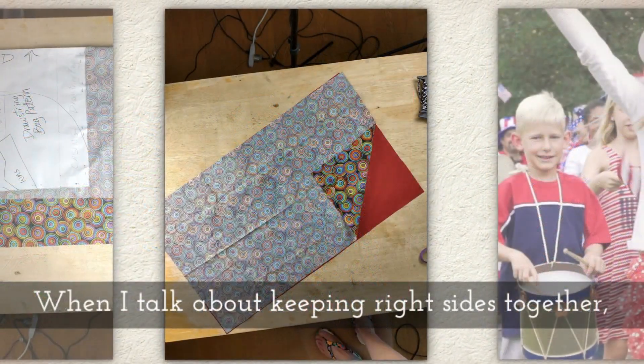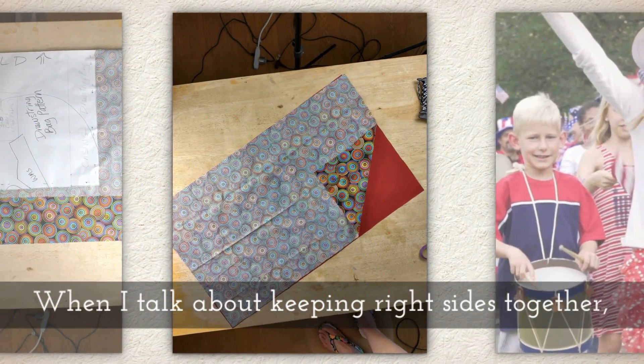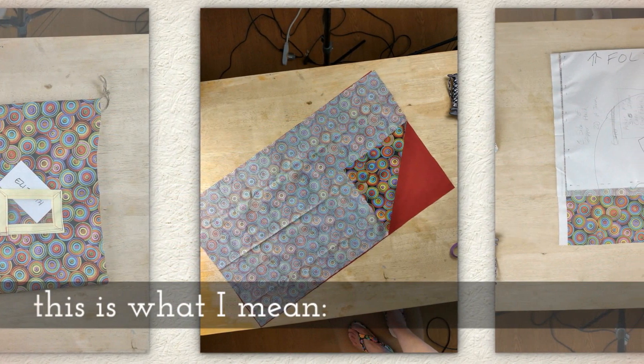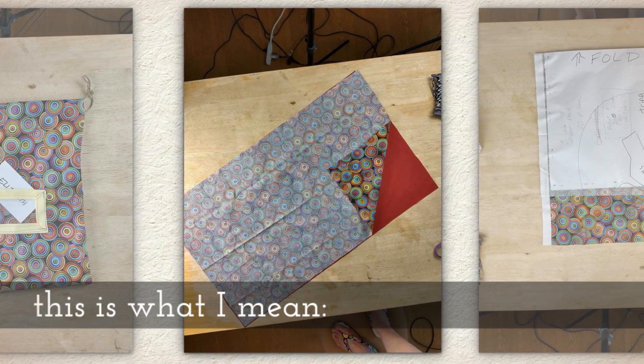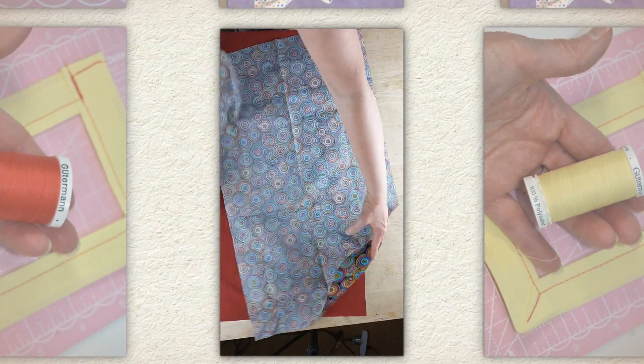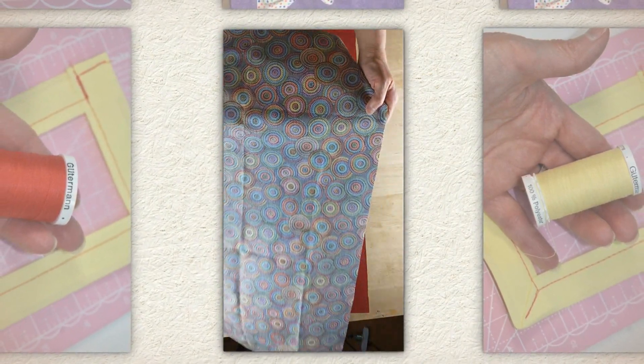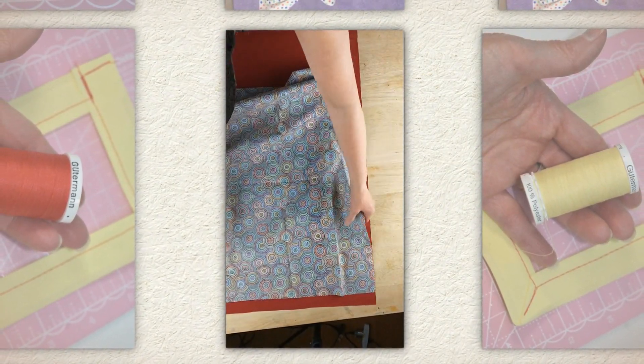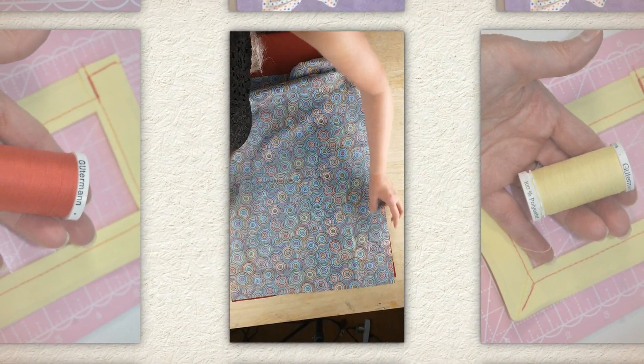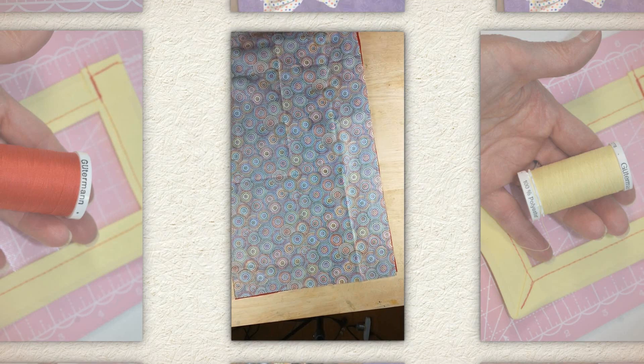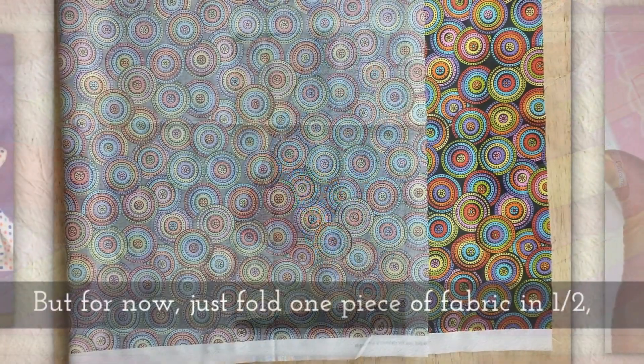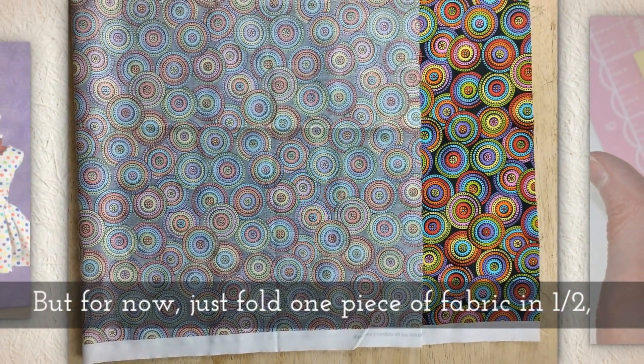Now when I talk about keeping right sides together, this is what I mean. You'll want the pretty side touching the pretty side of fabric. Now my red fabric doesn't have a right and wrong side, so it really doesn't matter. But the one with the circle pattern, it's got a wrong side clearly. But for now, just fold one piece of fabric in half.